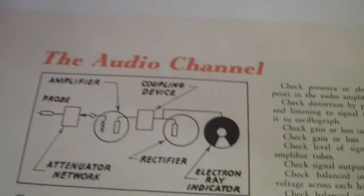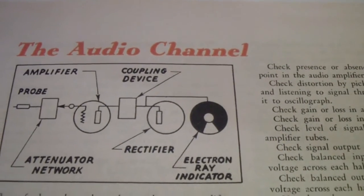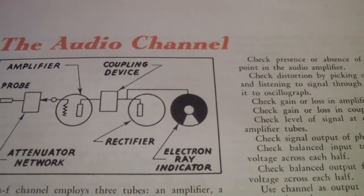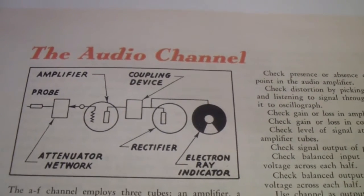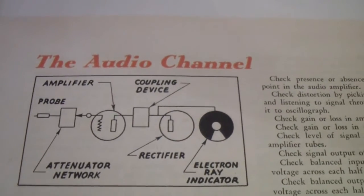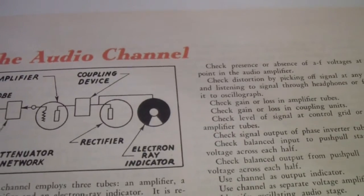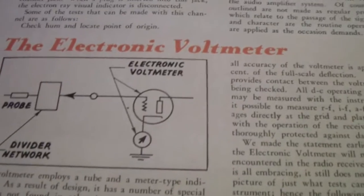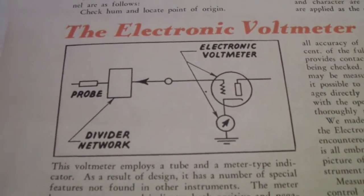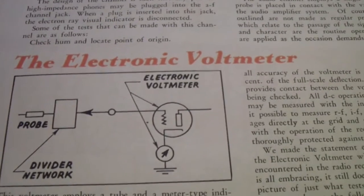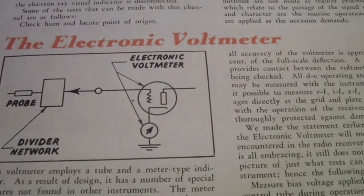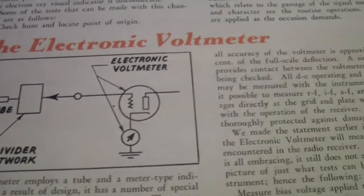The third channel is called the audio channel, and that is just basically an amplifier that converts an AF signal to a DC or slowly varying DC signal that can be applied to the electron ray indicator. This is somewhat like the AC channel of a vacuum tube voltmeter, except instead of showing on a meter, it displays on the eye tube. The next section is the electronic voltmeter, which is basically just a VTVM, a vacuum tube voltmeter. It has a probe and a divider network to adjust the input level, and then you apply the signal to an electronic voltmeter and an amplifier bridge circuit with a meter.